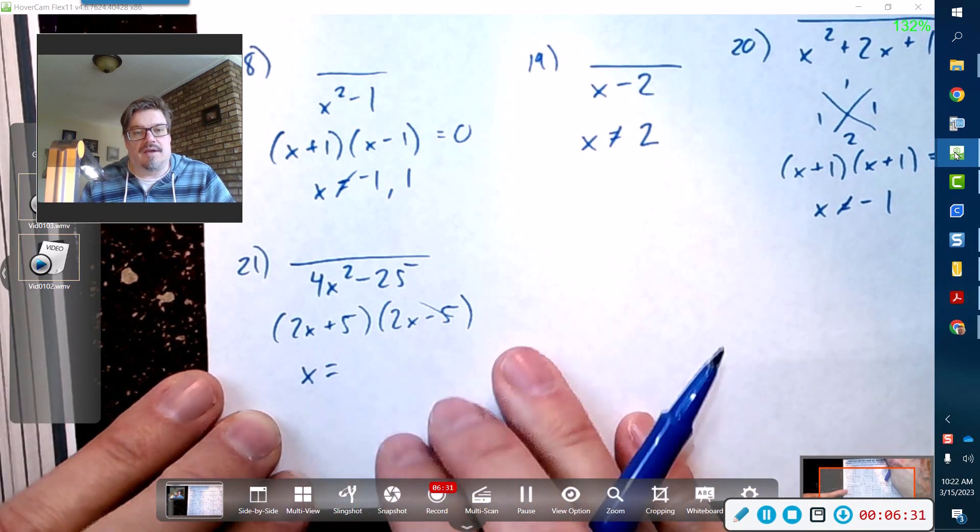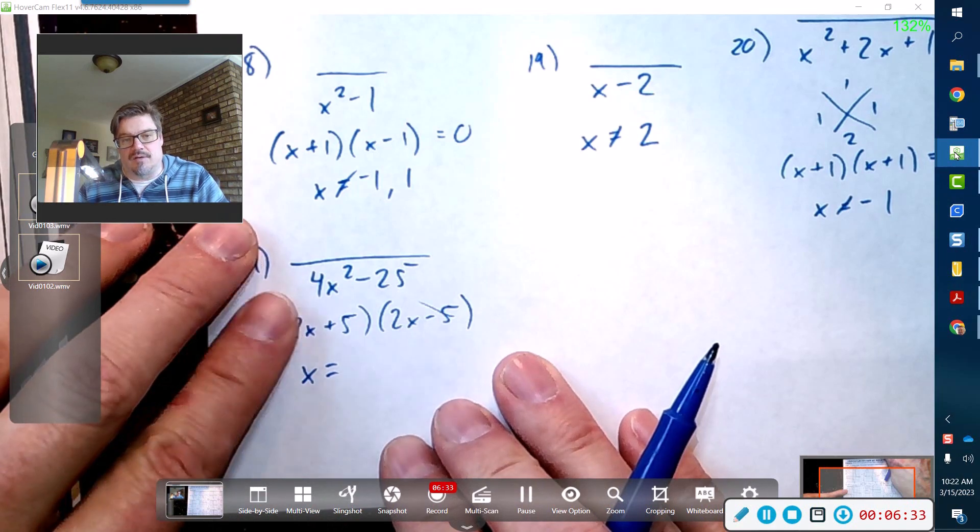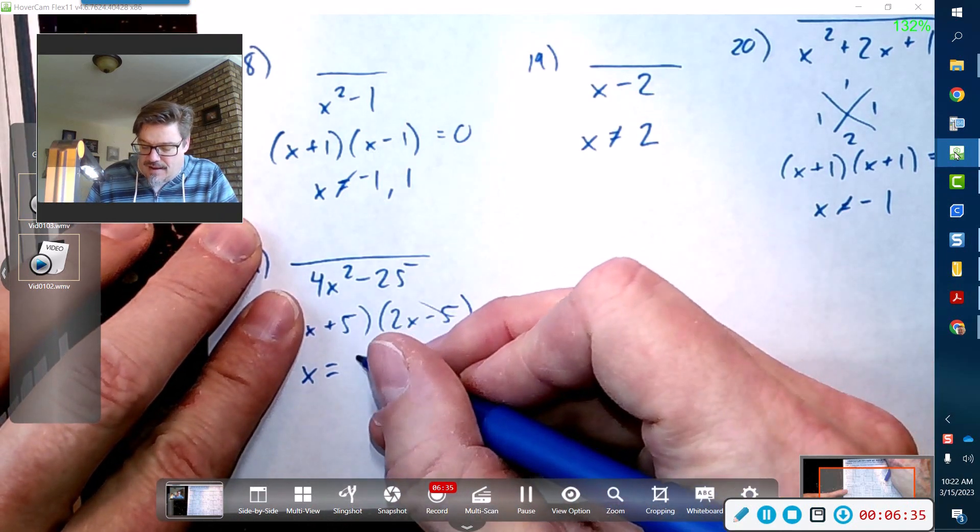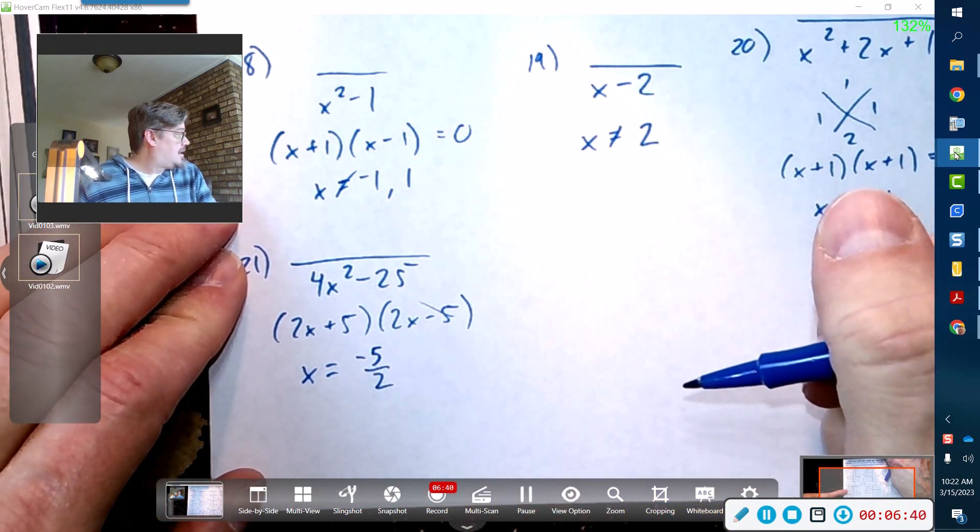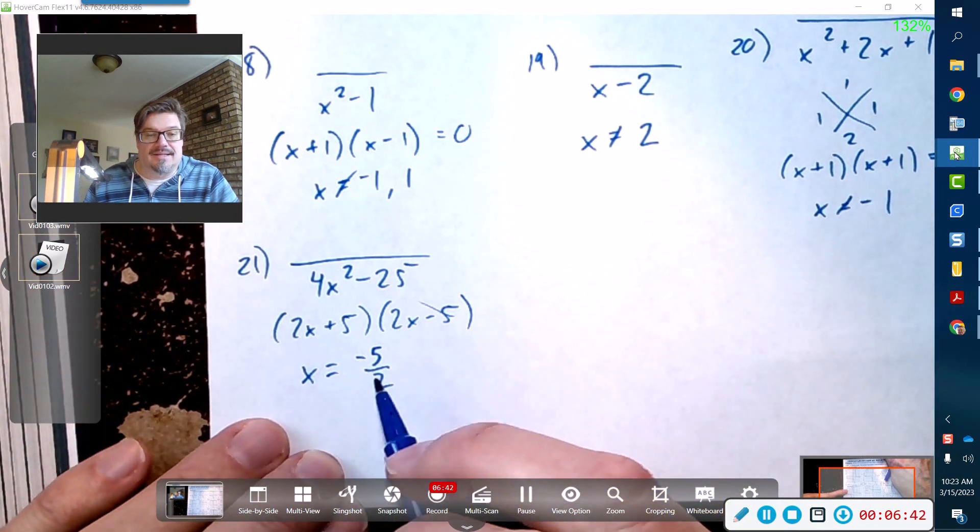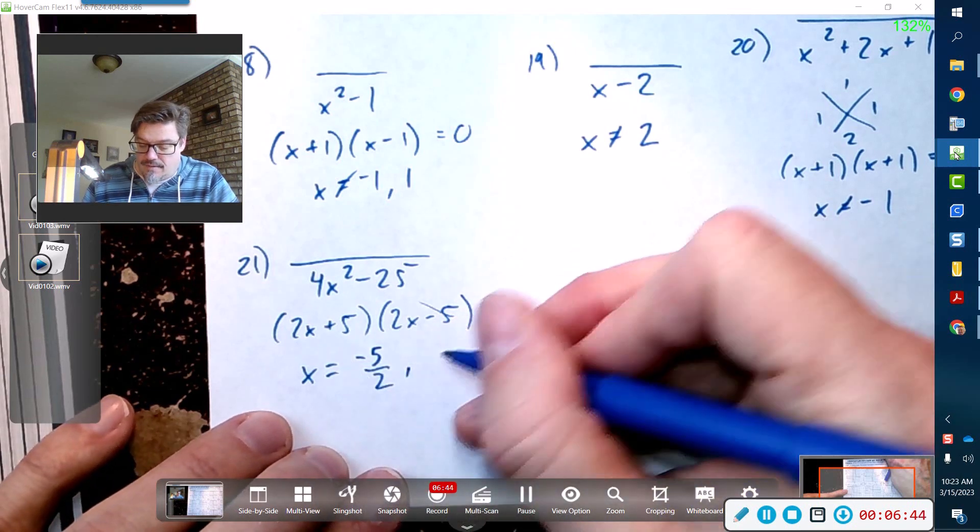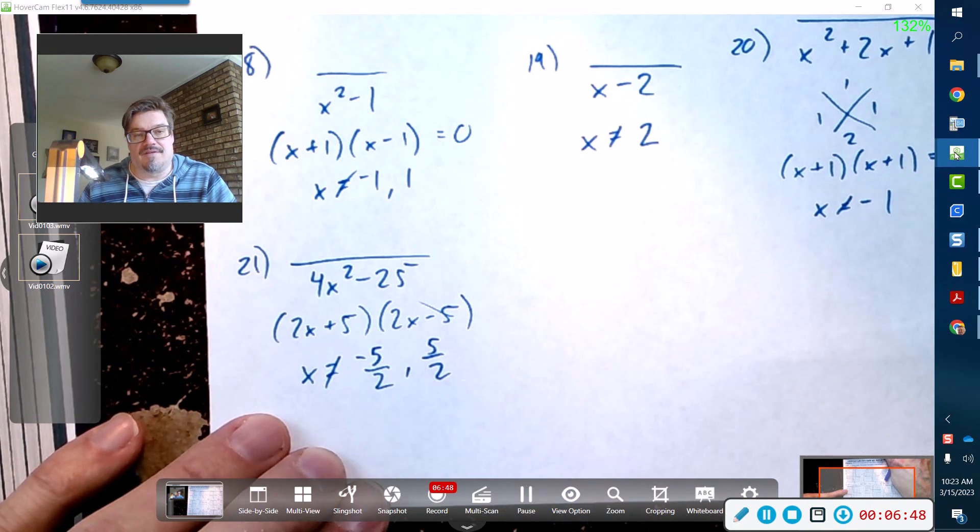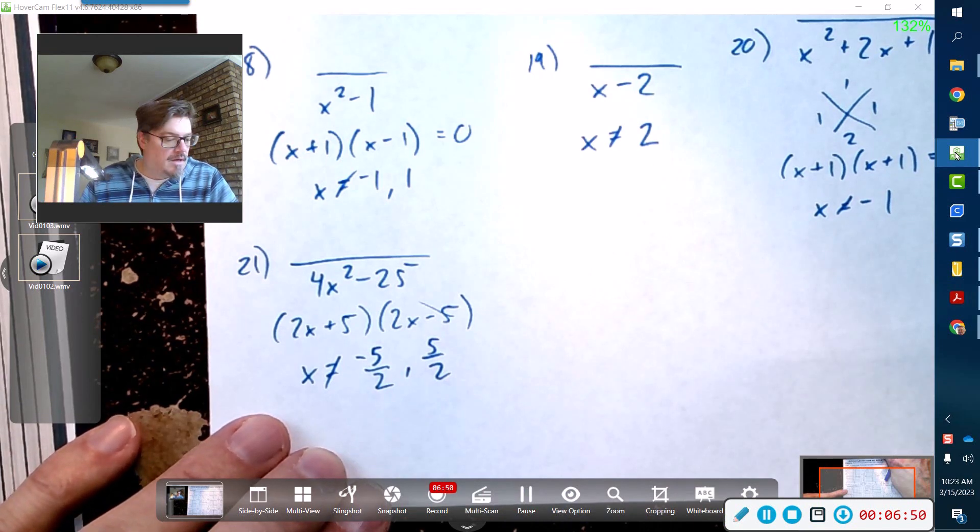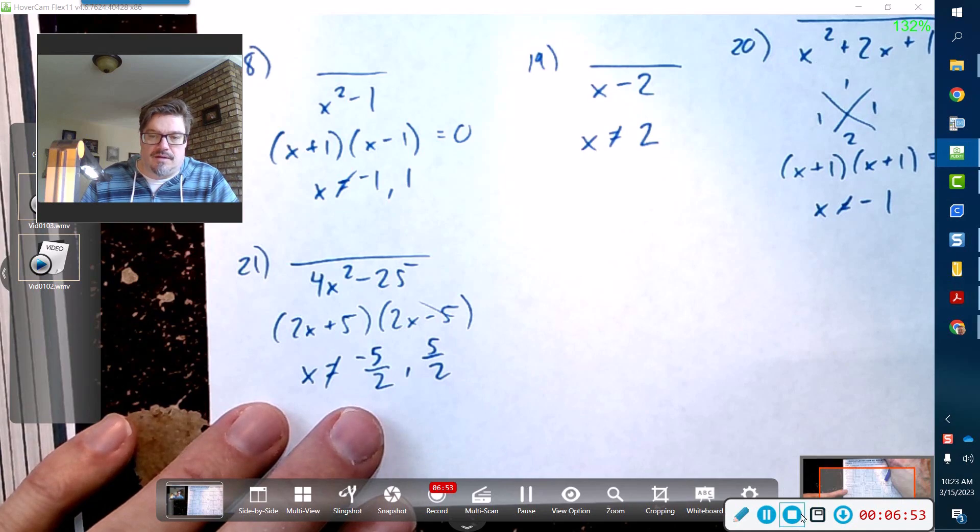Now x cannot equal the value that would produce 0 over here. If it was just—ignore the 2—it would just be a negative 5, but because the 2 is there we have to divide by 2. So this is negative 5/2 and this would be a positive 5/2. X cannot equal those or else you're going to be dividing by zero. Alright, that's it for excluded values. We'll move up to the next topic.